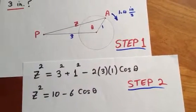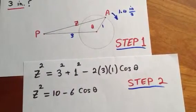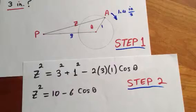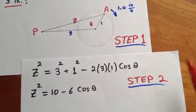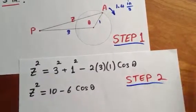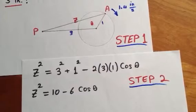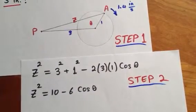Now step three is to relate the rates, so we need to differentiate the two sides with respect to time. Here theta and z are both functions of time t. Go ahead and do that before you watch the next video.